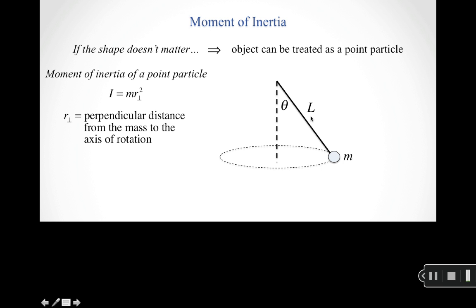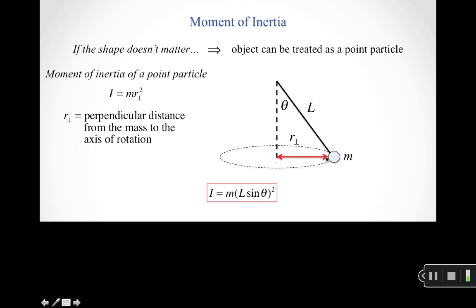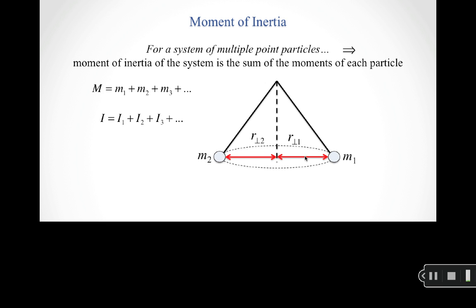Now consider the same mass on a string of length L, but let the string hang at an angle theta from the vertical. The perpendicular distance from the axis of rotation to the mass is no longer the full string length — it's L·sin(θ). So the moment of inertia becomes m·(L·sin θ)².